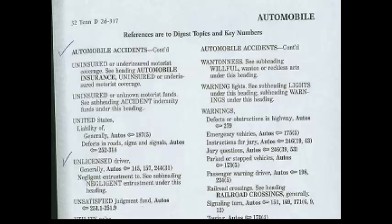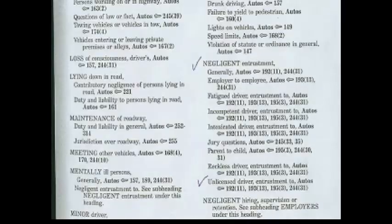So I've got to go back under automobile accidents and then I will find negligent entrustment, and then down to unlicensed driver. It has 'autos' in bold — that's going to get us into the larger set — and then it will have key numbers: 192(11), 193(13), etc.